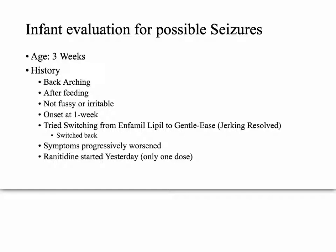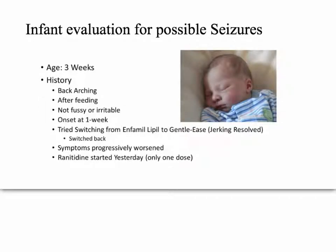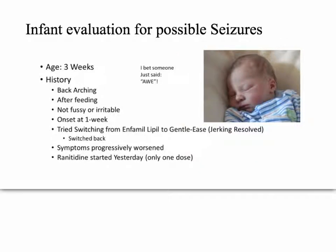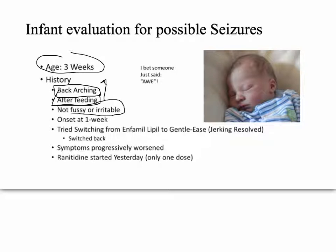So how did the case present? We had an infant being evaluated for seizures. What I want you to pay attention to is the age: three weeks old. So what causes spasm convulsion seizures in a three-week-old? There was back arching — this is a clue towards something we're going to look at. It happened after feeding — this is another big clue.